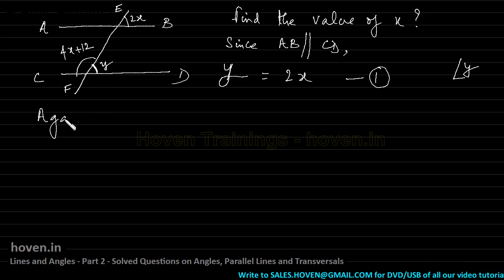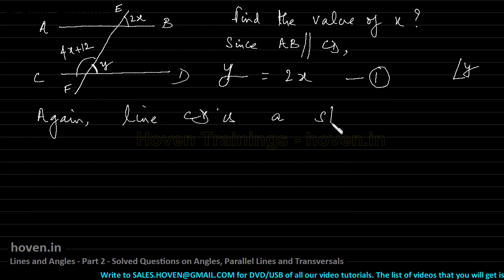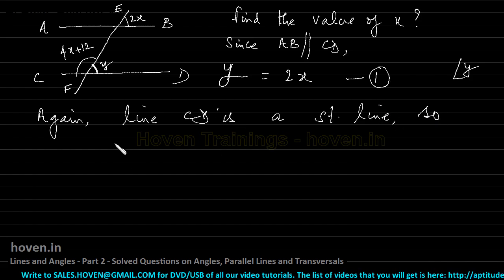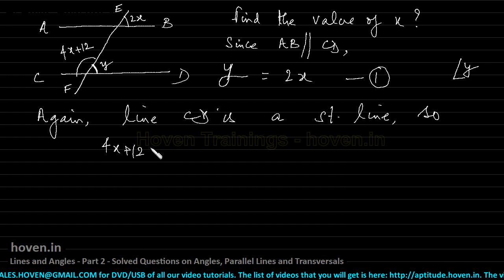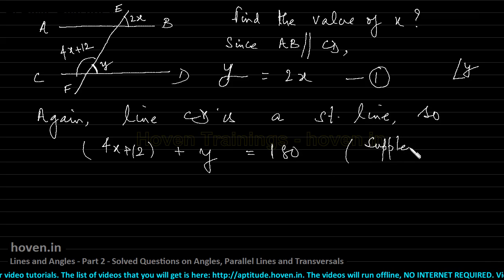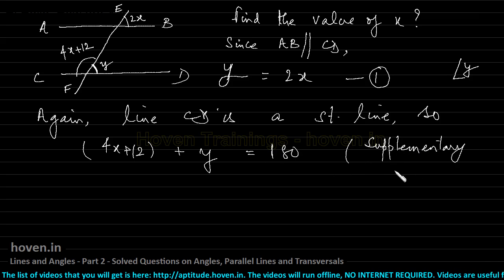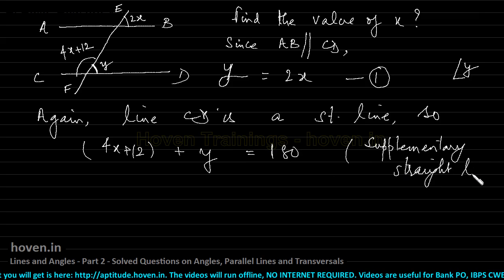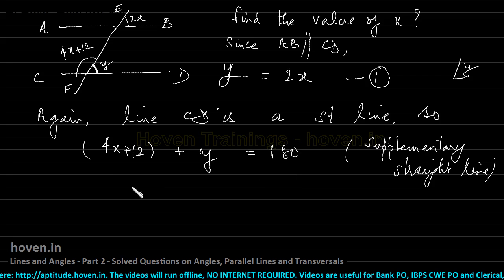Again, line CD is a straight line. So 4x plus 12 and y should add up to 180. The reason is supplementary straight angles, straight line. This is what I mean here.